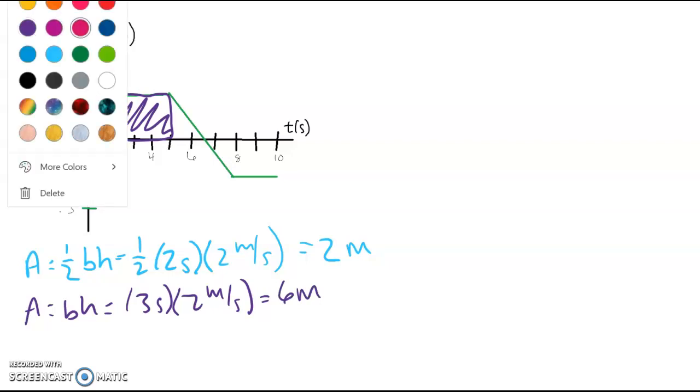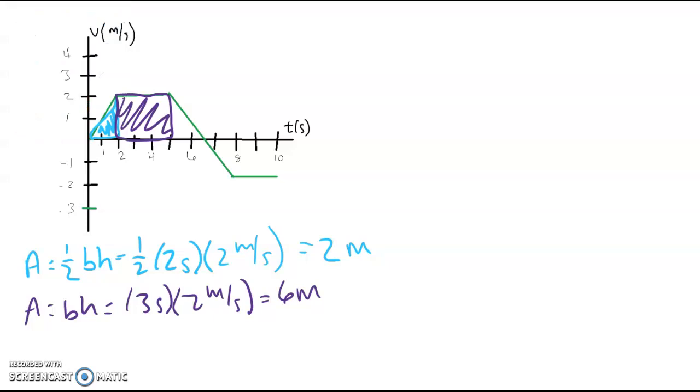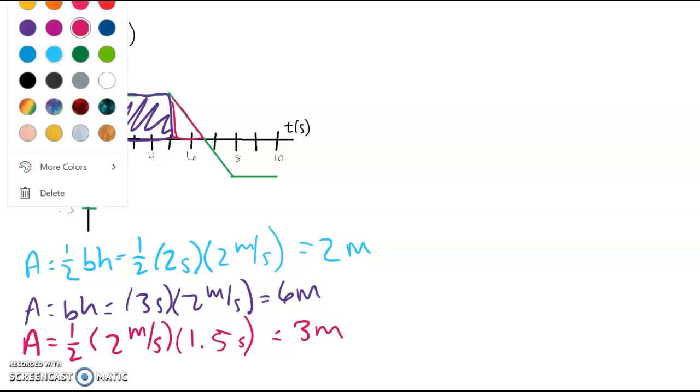So now let's do this triangle here. So that area is 1 half times our height again is 2 meters per second. Now base is kind of annoying number, 1.5 seconds. So 2 times 1.5 gives us 3 meters.